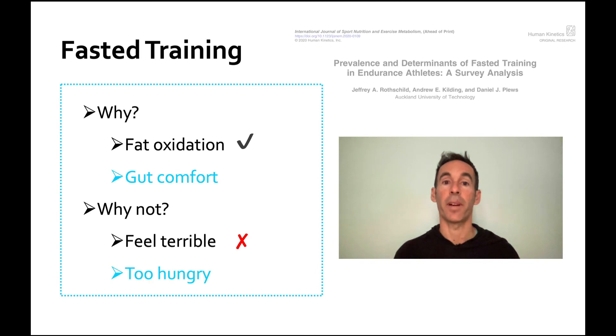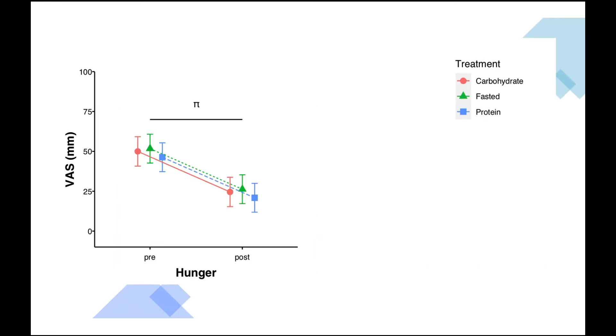Now what about gut comfort and hunger? Those are reasonable questions, so we also looked at that in this study. Hunger was measured using a visual analog scale or VAS. Imagine a scale on a piece of paper asking the question, how hungry are you? On the left it'll say not hungry at all, and on the right it'll say extremely hungry, so it's a quantifiable way to measure hunger. At the beginning when people came into the lab, there was no differences in hunger. Everyone was around 50 out of 100, and after exercise hunger decreased to around 25 out of 100, but importantly there was no differences between groups.